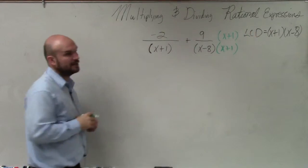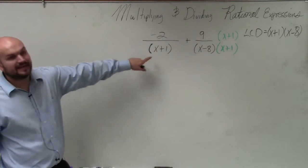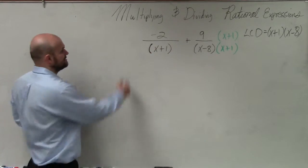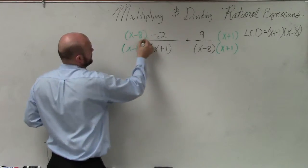Over here, I have x plus 1 in my denominator. To determine to get this to my common denominator, I need to multiply it by x minus 8.